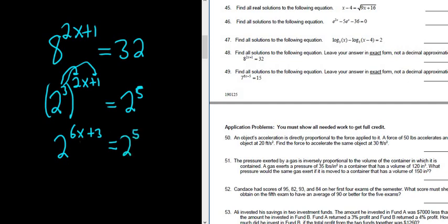And so whenever you have something like this, you can just drop the 2s. Okay? So you get 6x plus 3 equals 5.